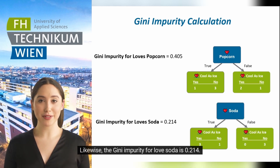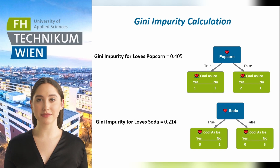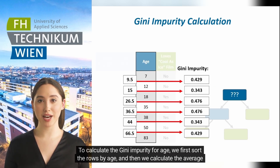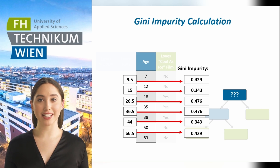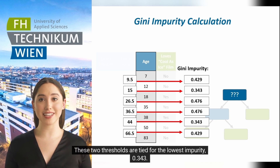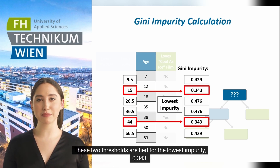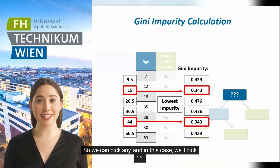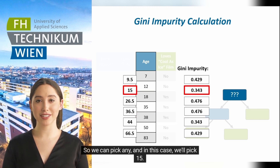Likewise, the Gini impurity for loves soda is 0.214. To calculate the Gini impurity for age, we first sort the rows by age and then calculate the average age, and likewise for all other values. Two thresholds are tied for the lowest impurity, 0.343, so we can pick any — in this case, we'll pick 15.